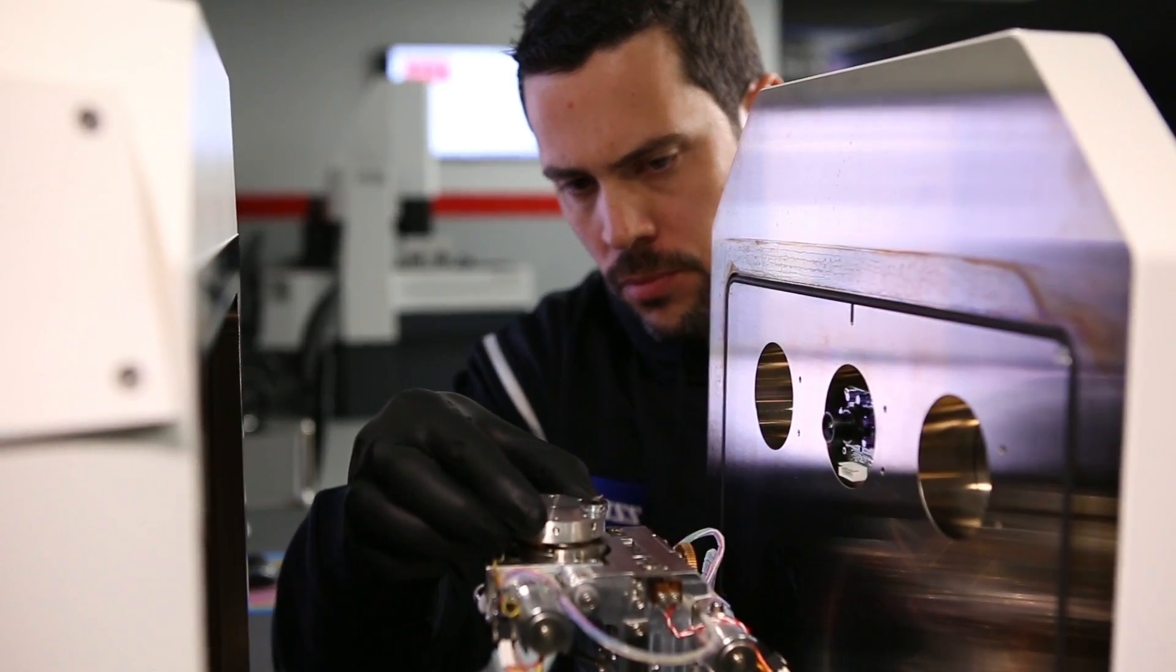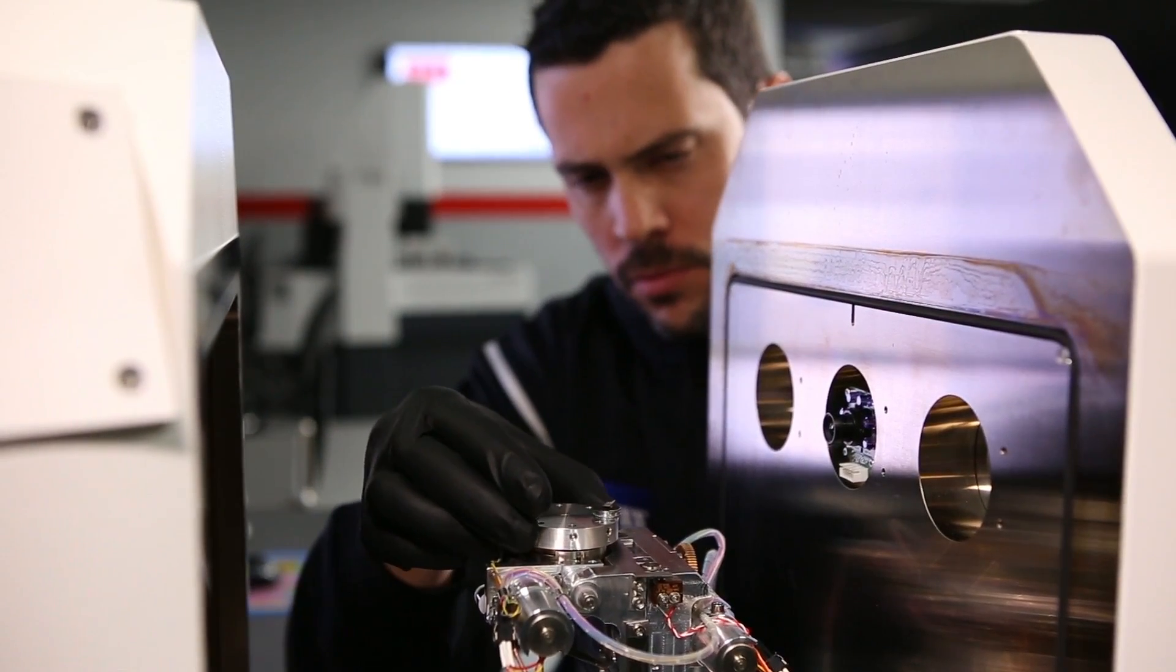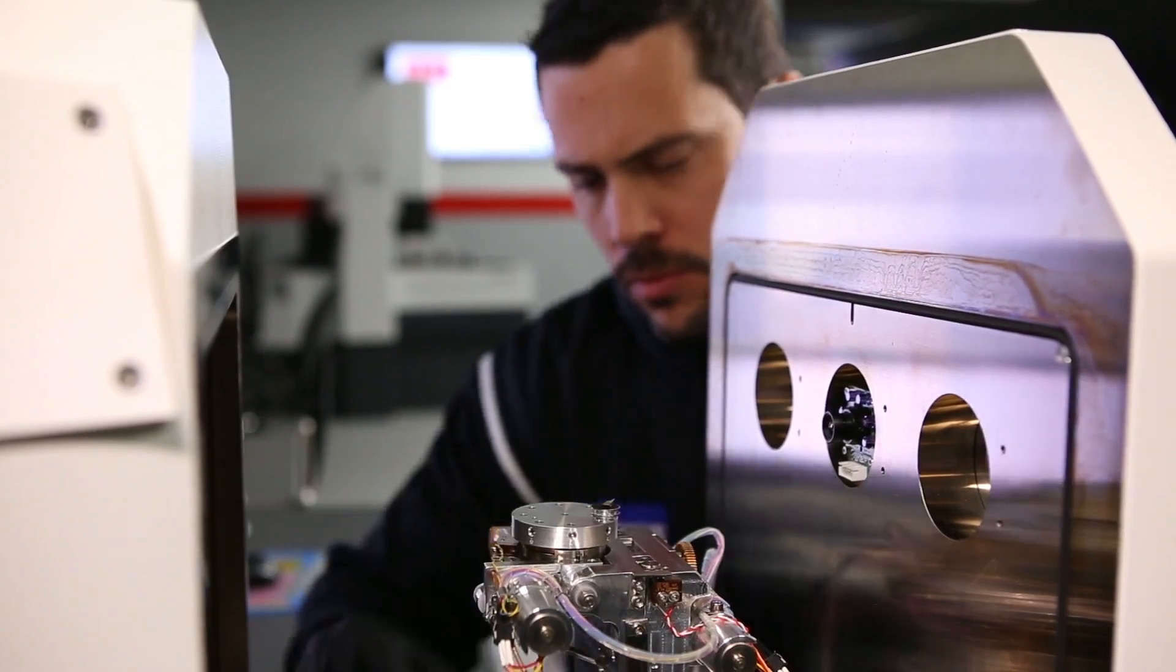We are also using correlative microscopy between our Discovery V20 stereo microscope and the EVO. We identify regions of interest at low mag on the Discovery V20, and then we can further analyze those regions of interest in the MA25.